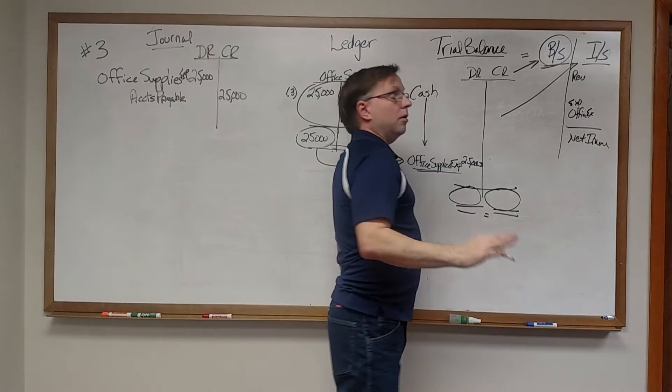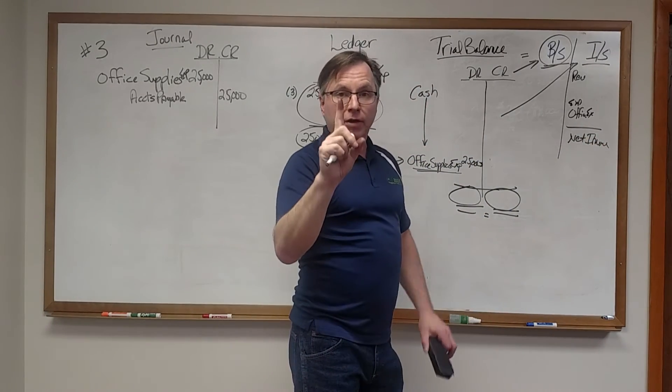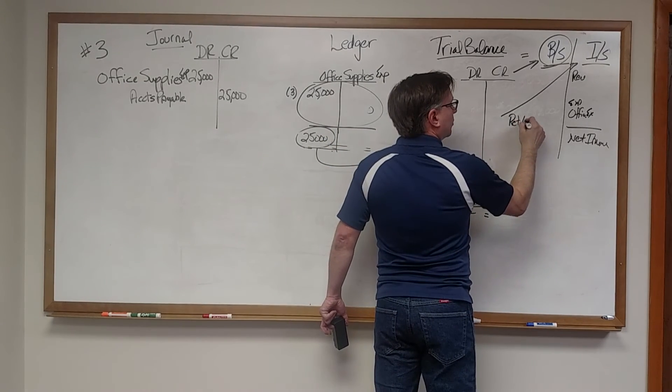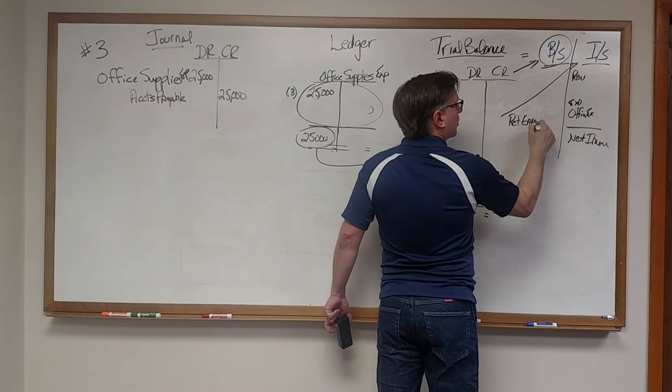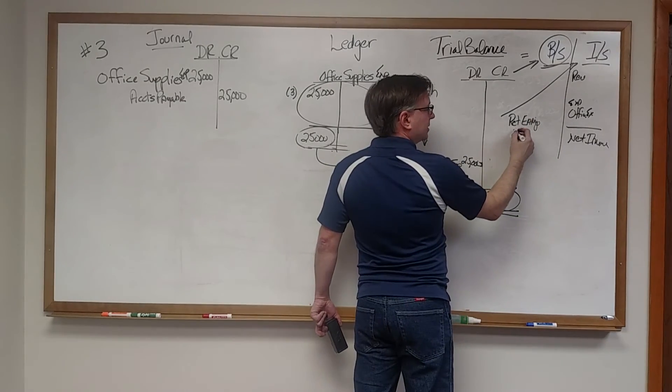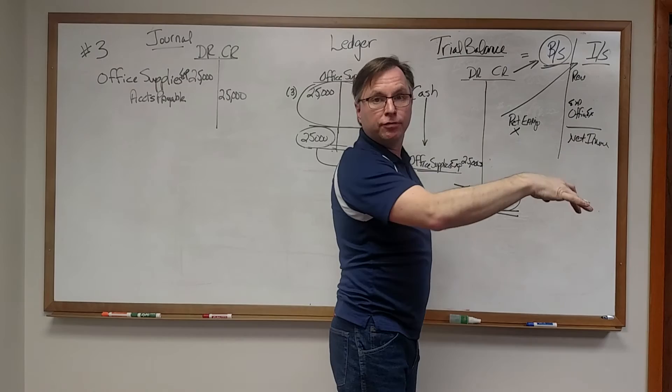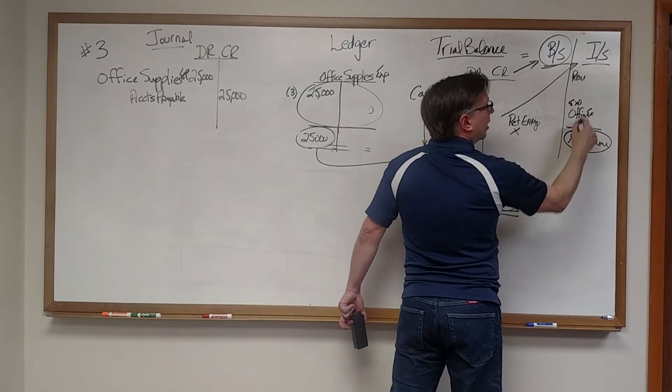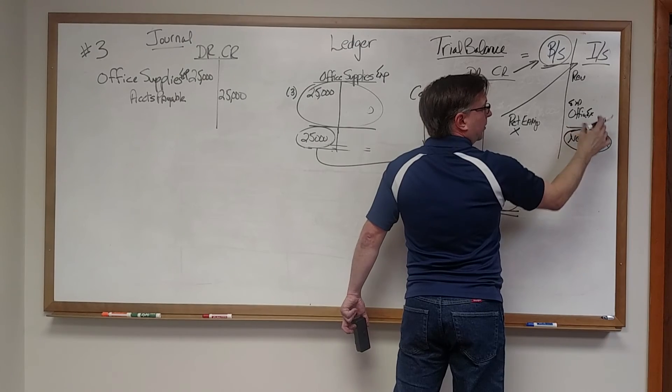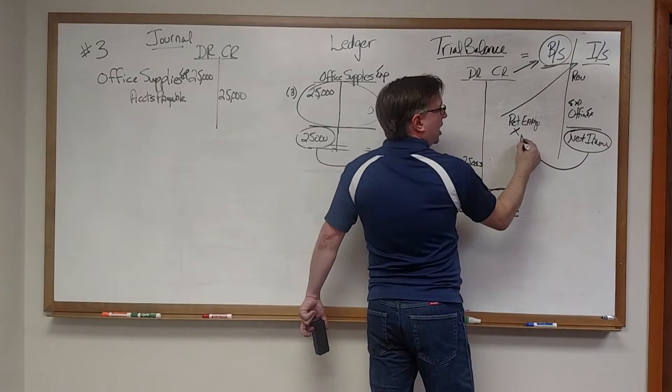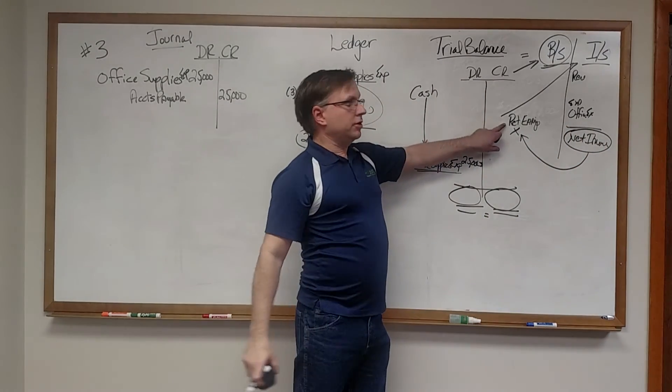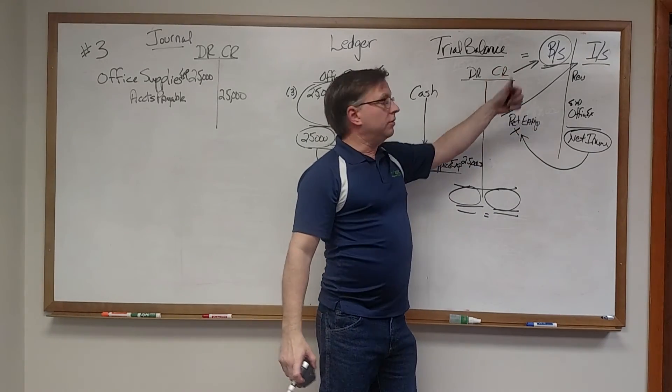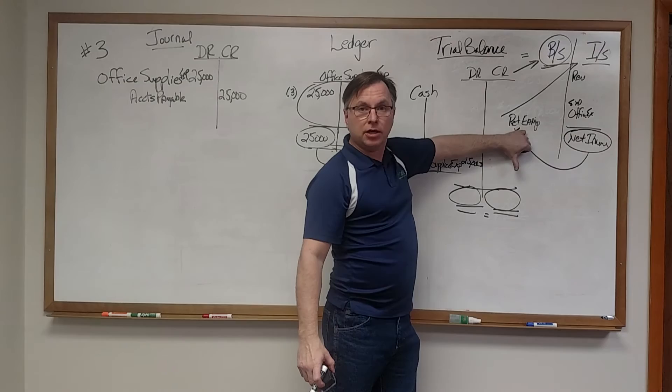And if you all remember, one very important step in this is that balance sheet is going to have a retained earnings number. That retained earnings number is some prior balance that we had from before. So we have to remember to take this net income amount that we finally get from our income statement and change that retained earnings balance. If we have income, it's going to make it go up. If we have a loss, it's going to make it go down.